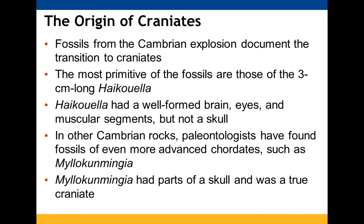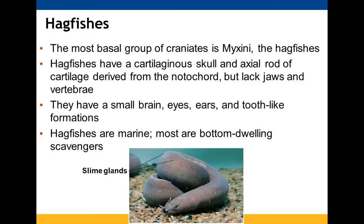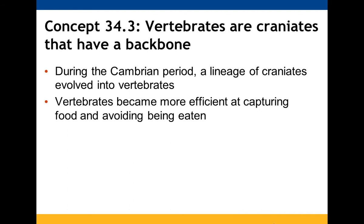Where did craniates come from? We can look at craniate fossils from the Cambrian to see this transition — examining how they had a brain, eyes, and a skull. The most basal group of craniates are the Myxini, the hagfishes. They have a cartilaginous skull and an axial rod of cartilage derived from the notochord, a small brain, eyes, ears, and teeth-like formations. They are found in marine environments.